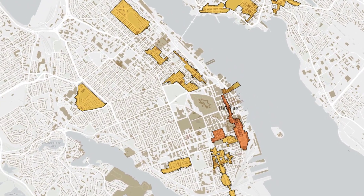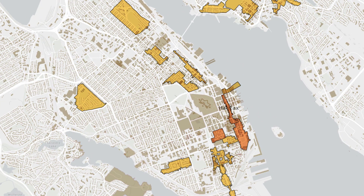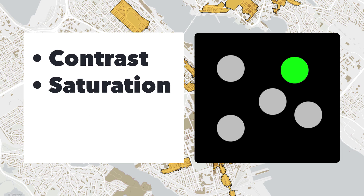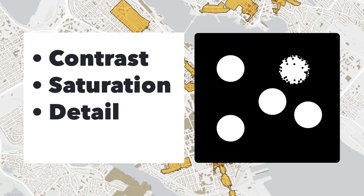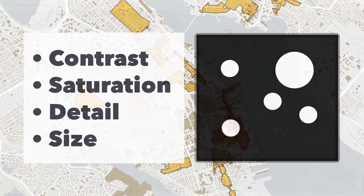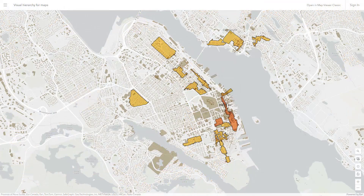By this point I've mentioned several properties that make things pop, including high contrast with the background, highly saturated colours, detailed shapes, and large shapes. This isn't a complete list, and you don't need to memorize it. The trick is to understand your map's goal, then try lots of different things.